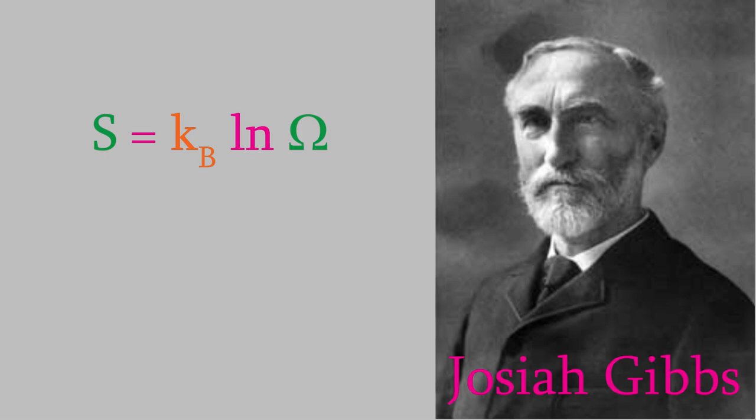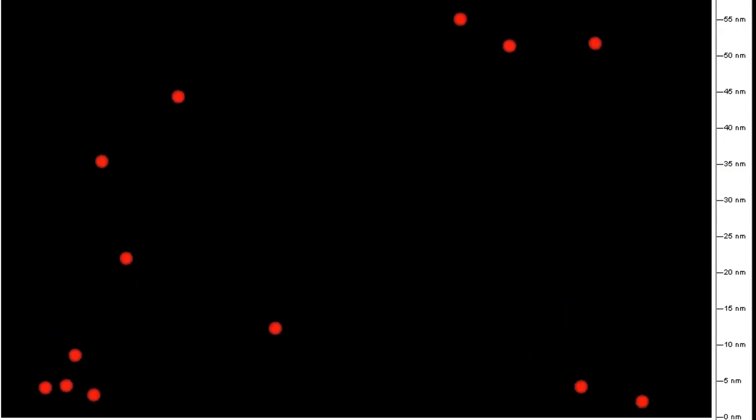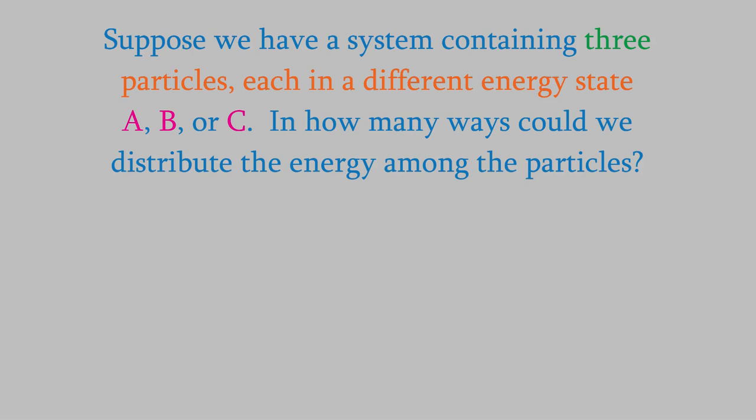The answer came from Josiah Gibbs, who came up with a different method for determining the entropy using basic ideas from probability theory. He started by imagining a much smaller system and thinking about how the energy could be distributed among the particles. For example, suppose our system consists of three particles, each in a different energy state, A, B, or C. How many different ways could the three particles have those three energies? Because this system is so small, it won't take long to write all the possibilities down.